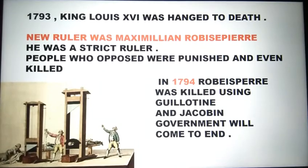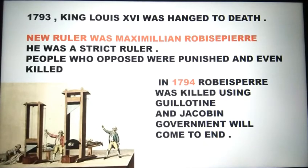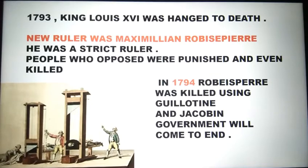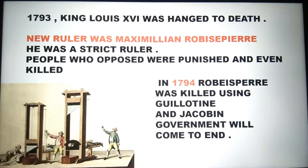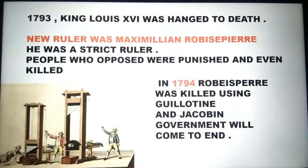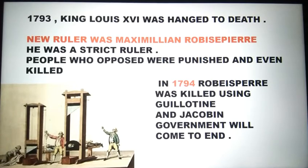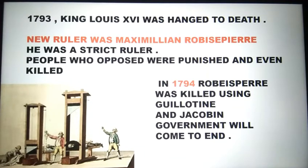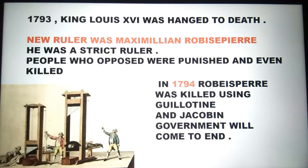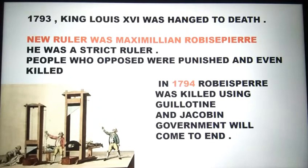In 1793, King Louis XVI was hanged to death. A new ruler came into the scene: Maximilien Robespierre. He was a strict ruler and the founder of the Jacobin Club. People who opposed him were punished and even killed. He used a device called the guillotine — I have posted a picture here so the idea is clear. Many people were frustrated because of this strict rule. Finally in 1794, he was removed from power and also executed using the guillotine, bringing the Jacobin government to an end.